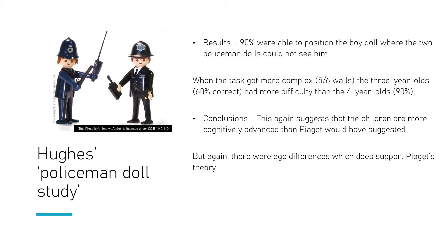They found that 90% of the children were able to correctly position the boy doll so that the policeman dolls couldn't see him. They then made the task more complex by adding more walls — five and then six sections — and still found quite a high success rate. Of the younger three-year-olds, around 60% got it correct; of the older four-year-olds, around 90% were correct. This suggests that perhaps children are better at decentering and not as ego-centred as Piaget suggested, and that Piaget's results may have been a factor of his methodology — a potential criticism of Piaget's theory.